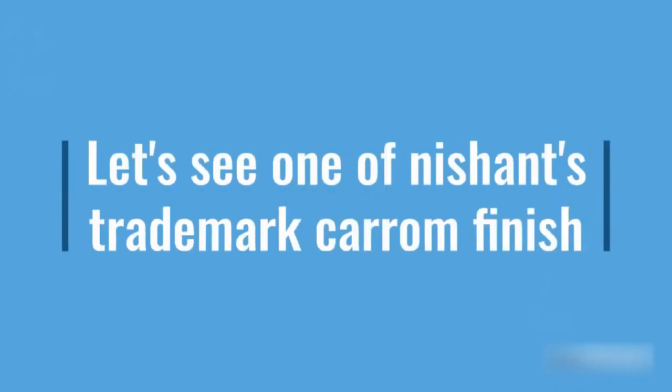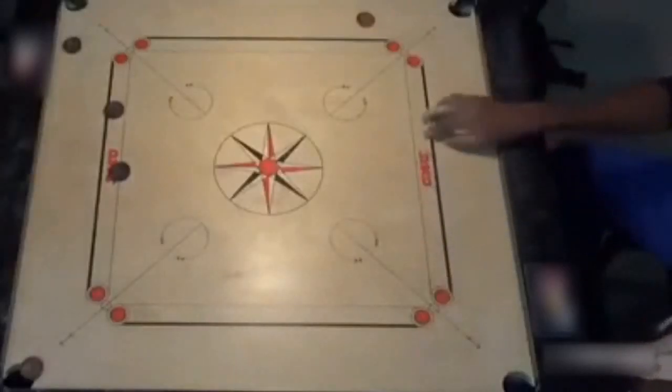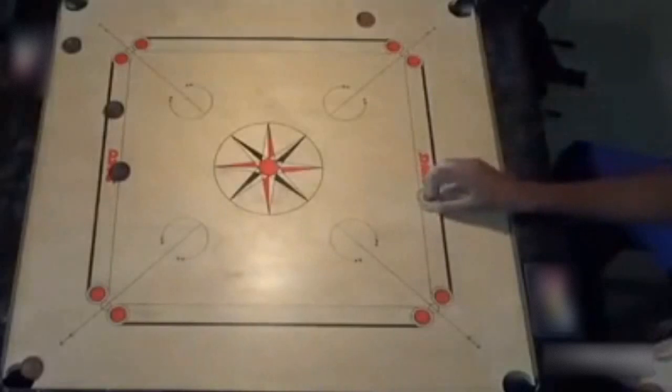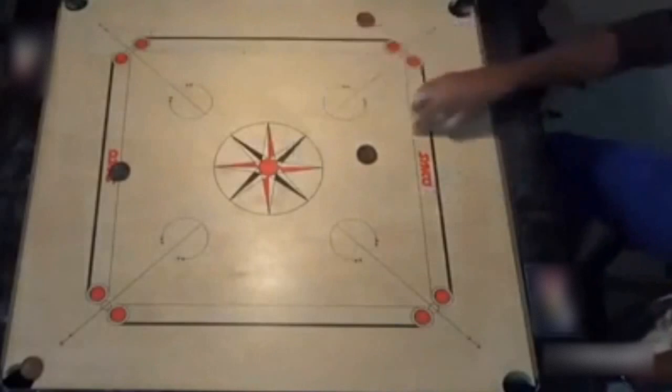Let's see one of Nishant's trademark Carrom finish. Here is a Carrom position in which the opponent didn't pocket his thumb, expecting that he will likely get another chance. I would highlight that the opponent's thinking is absolutely right here and it should work in more than 90% of the cases.